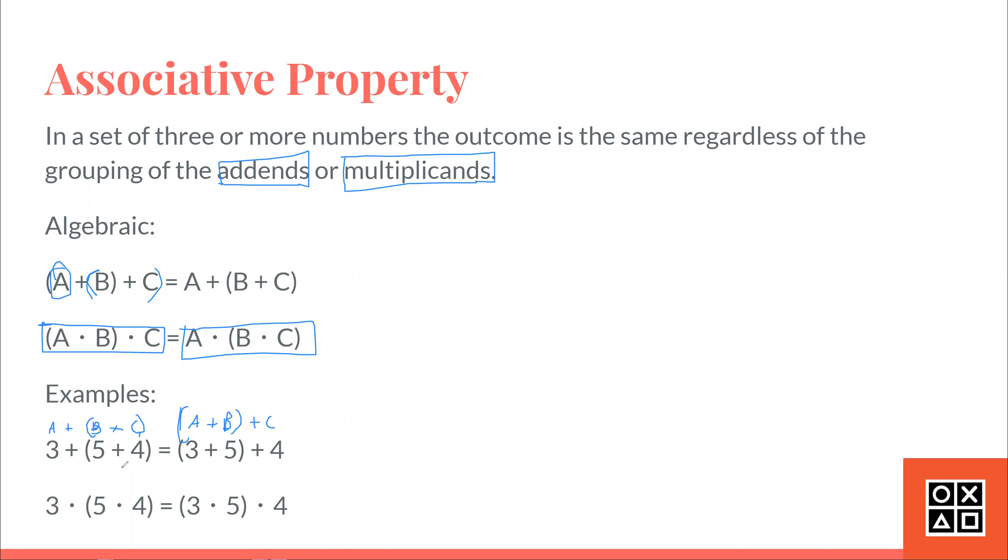So, 5 plus 4 is 9. 9 plus 3 would be 12. Now, if you go over here, 5 plus 3 is 8, and 8 plus 4 would also be 12. And 12 equals 12. That is true.